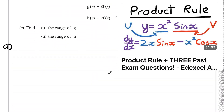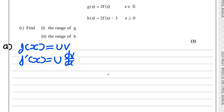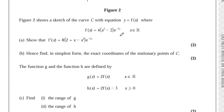If you remember the product rule: if f(x) equals uv, then f'(x) equals u dv/dx plus v du/dx. We're going to call one of the functions u and the other v. For this particular one we have this 4 at the front — I'm going to ignore this for now and just multiply everything by it at the end. I'm going to say that x squared minus 2 is u, and e to the power of minus 2x is v.